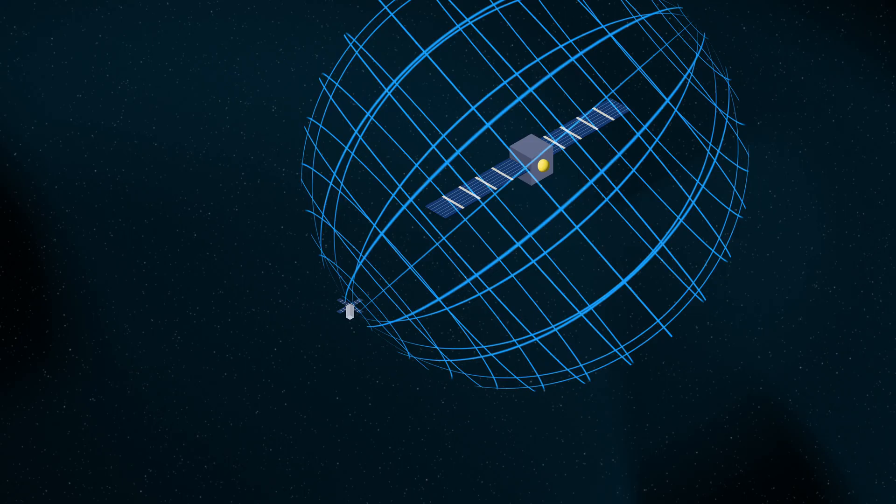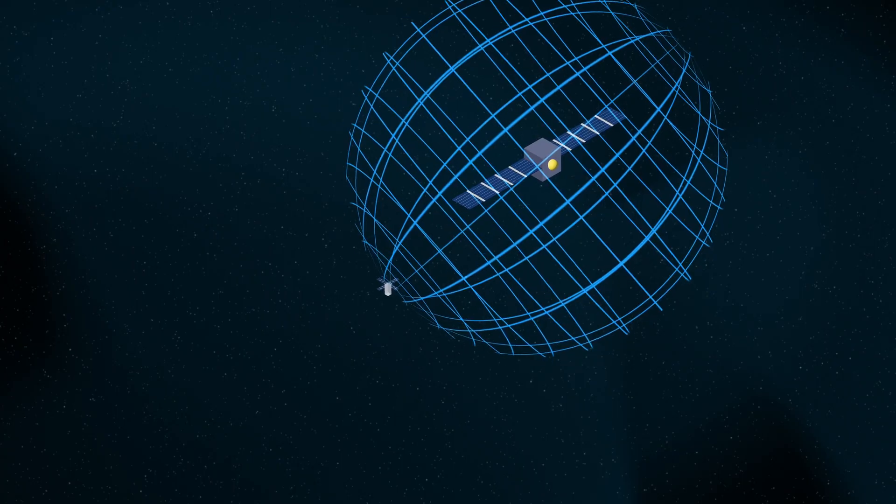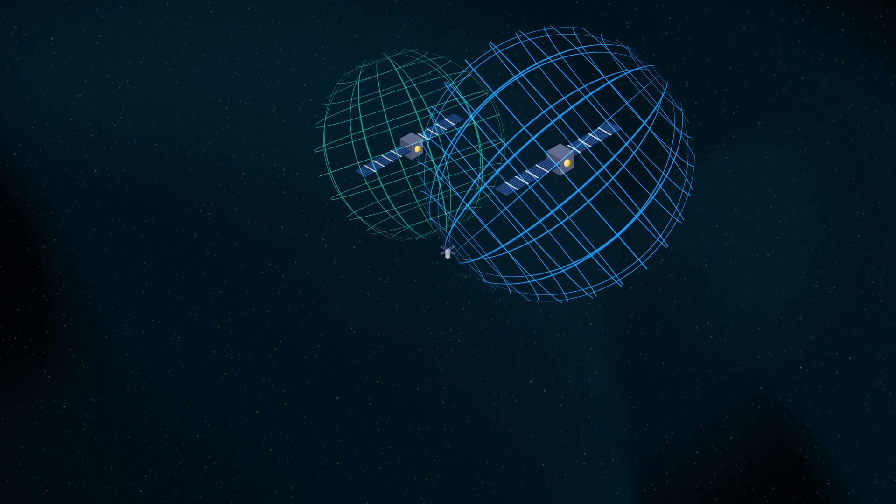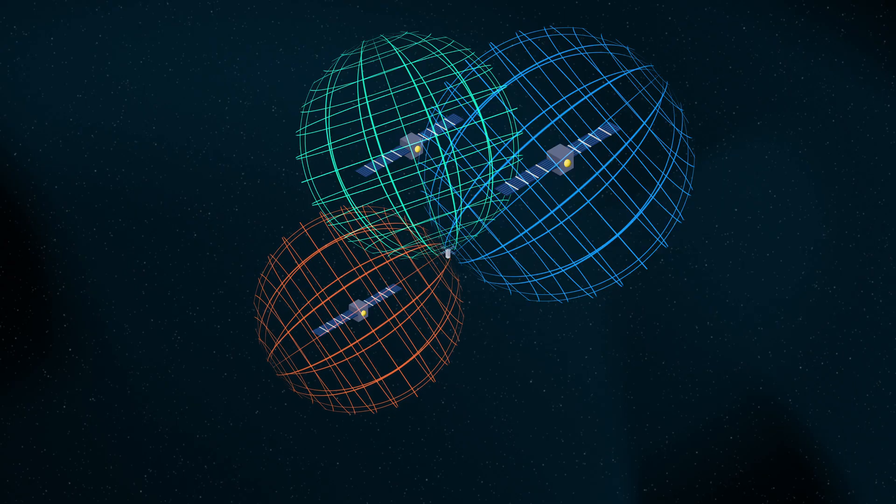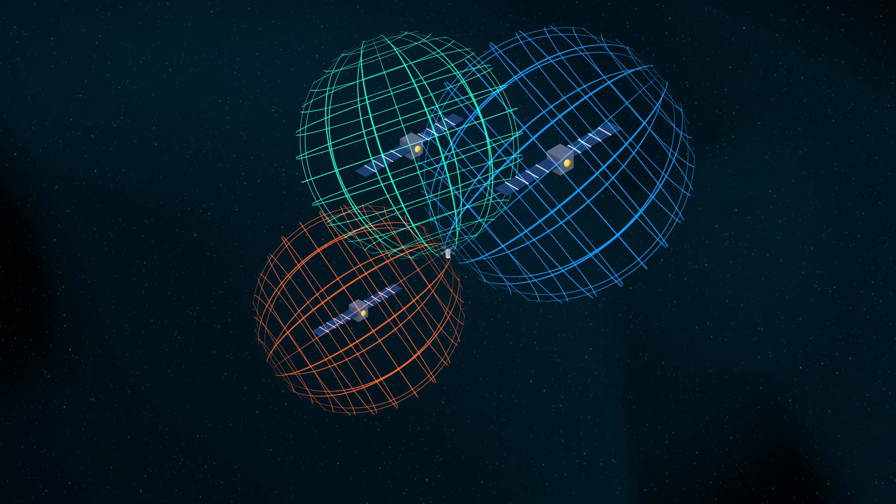Measuring the time of arrival of one CCN's broadcast constrains the listener node to a position somewhere on a sphere around that CCN. A second CCN beacon further constrains the position to the circle that is the intersection of two spheres. Contact with the third CCN then pins the position to one of two points.